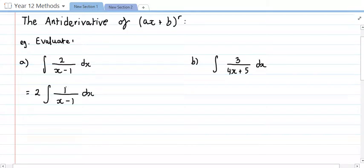So we've got the derivative here and the original function there, and let's just solve this now. So this is two times log e of the modulus of x minus one, and then plus c.